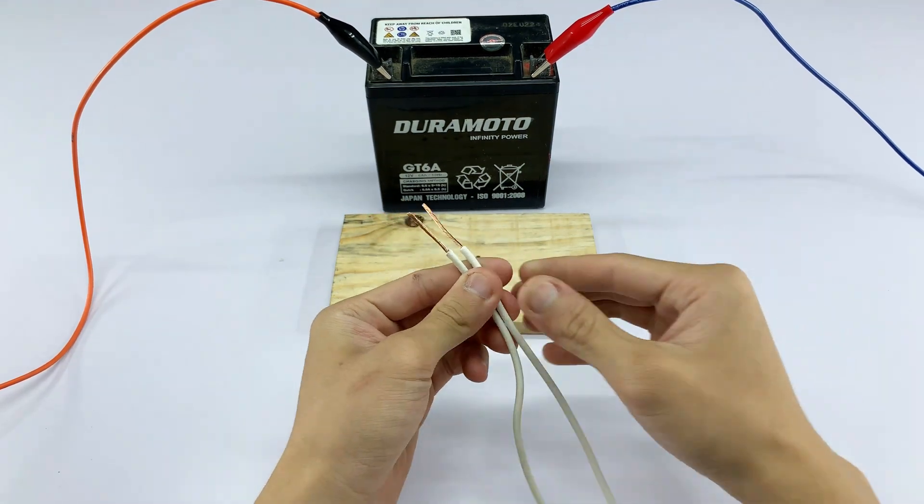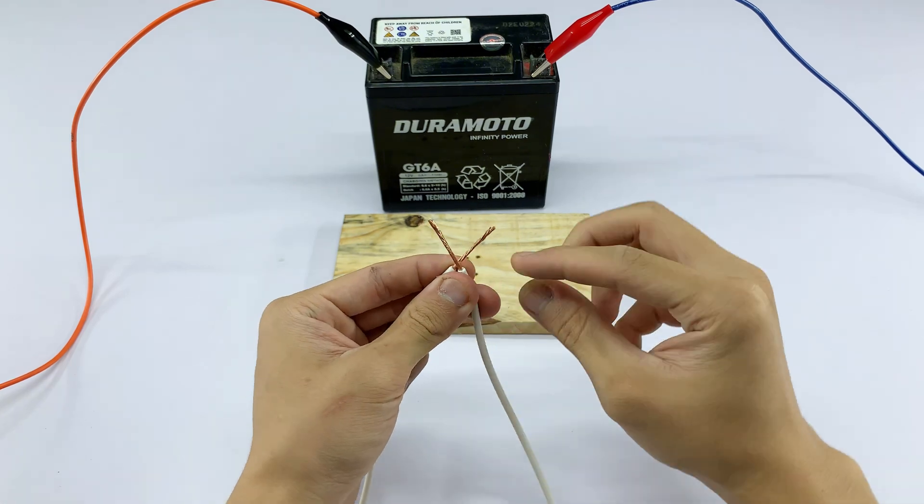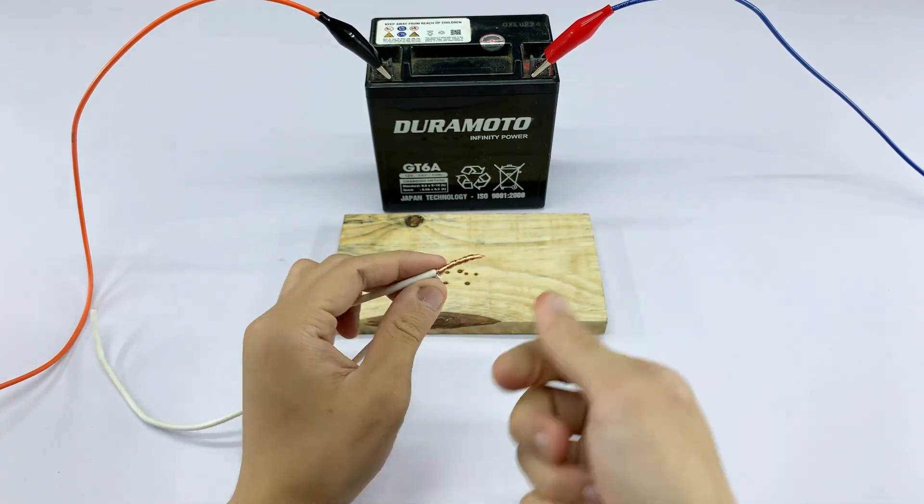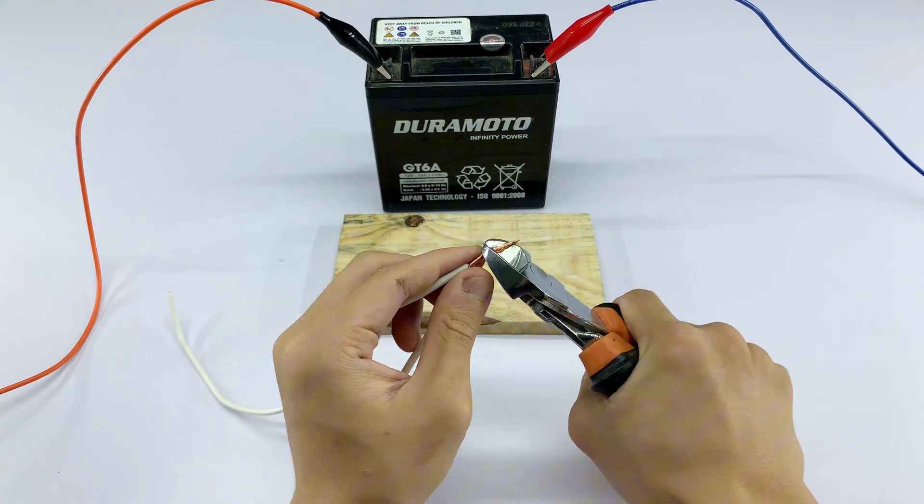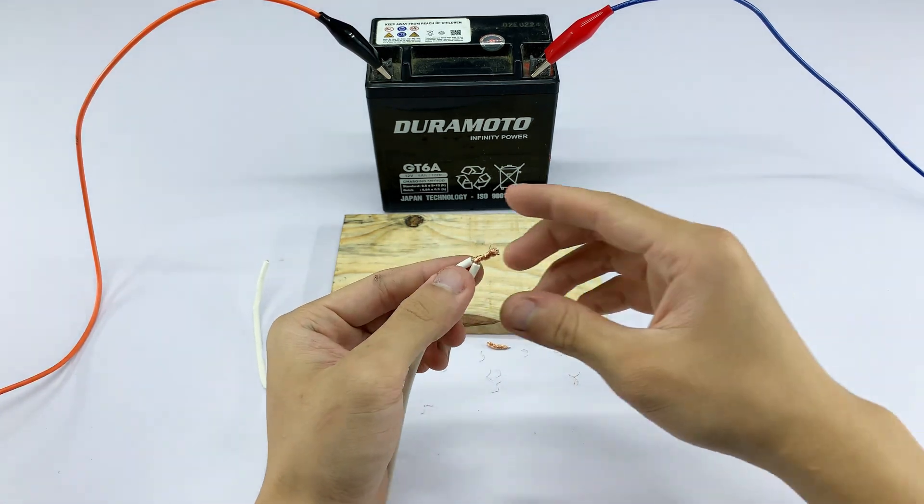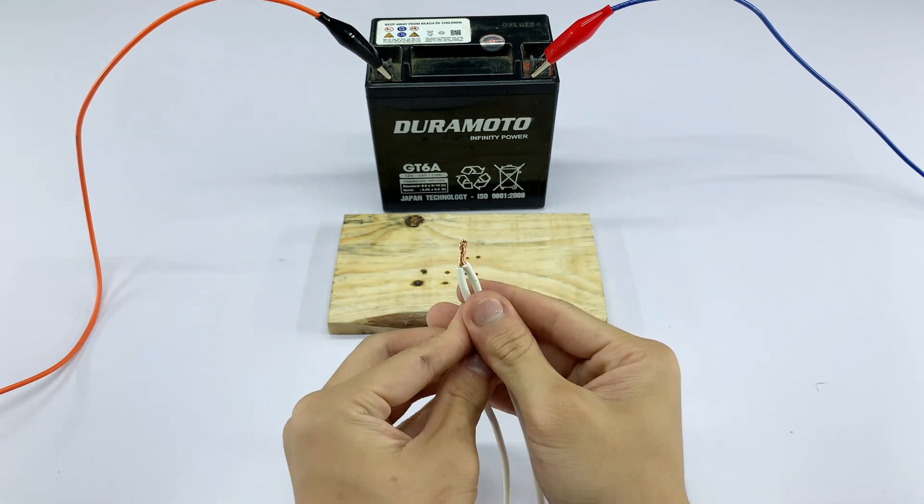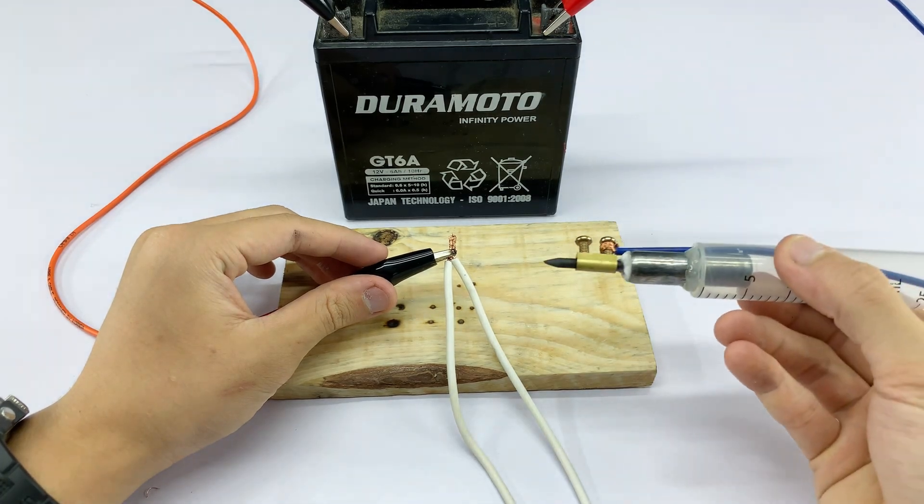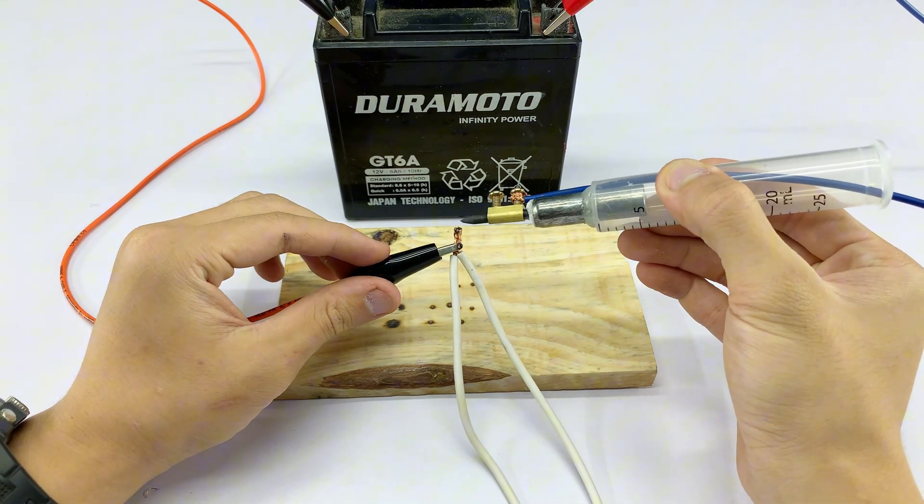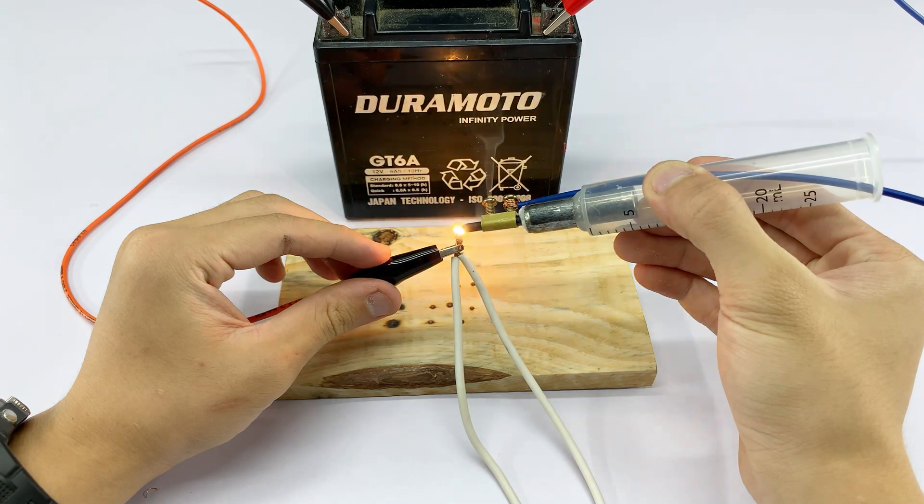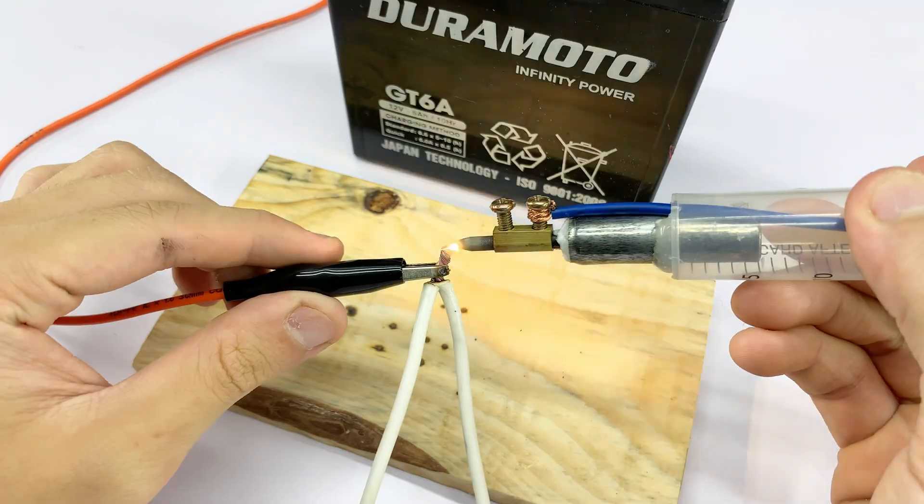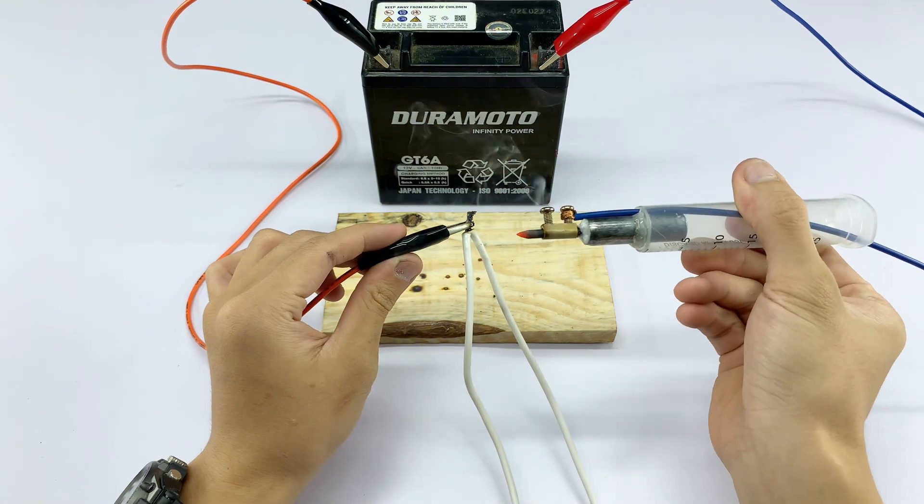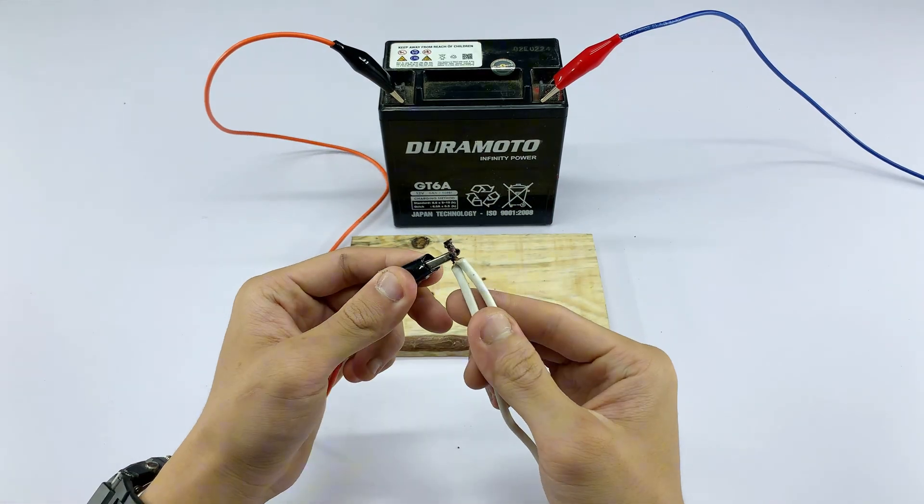Let's try it with a copper wire. I'll connect the clip to one end. And now applying the tool. Amazing! The copper wire heats up and melts. This proves its versatility for various materials.